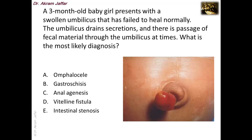In another case, a three-month-old baby girl presents with a swollen umbilicus that has failed to heal normally. The umbilicus drains secretion and there is passage of fecal material through the umbilicus at times. The most likely diagnosis is a vitelline fistula.